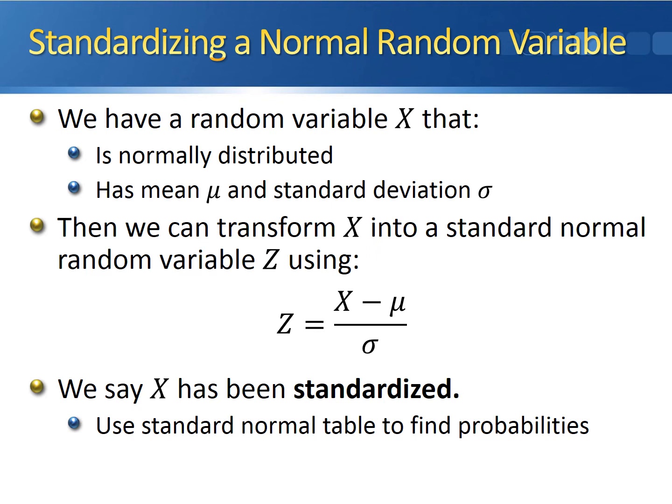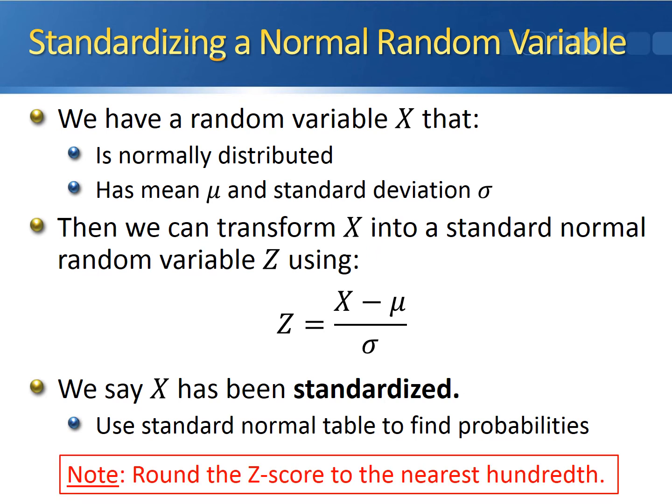Once we standardize x, we can use the standard normal table to find probabilities. One important note: whenever you're standardizing, you're typically not going to get a perfect decimal. So you always want to round the Z-score to the nearest hundredth, because that is the extent of the accuracy you have inside the standard normal table.